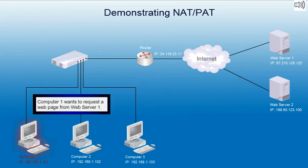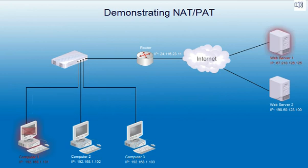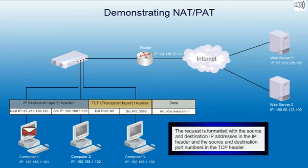Computer 1 wants to request a webpage from Web Server 1. The request is formatted with the source and destination IP address in the IP header and the source and destination port numbers in the TCP header.